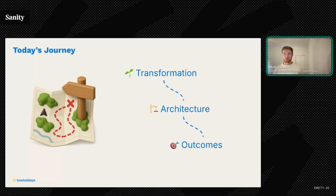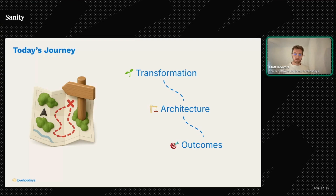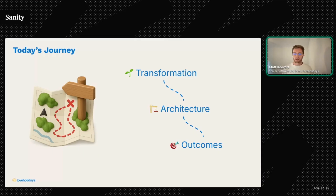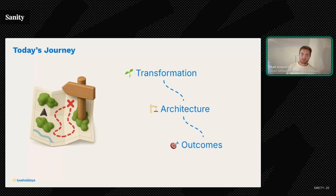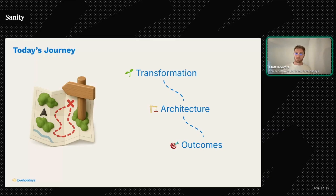We'll start with why we needed to transform our content architecture to support multiple languages. Then we'll explore the translation system we built, particularly focusing on how we handle complex nested content structures. Finally, we'll look at the real-world impact this has had on our expansion velocity and content operations. This is a story about using Sanity not just as a CMS, but as the foundation for a powerful content pipeline that's helping Love Holidays scale across Europe.